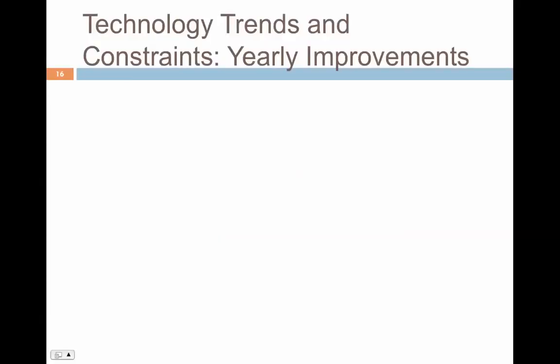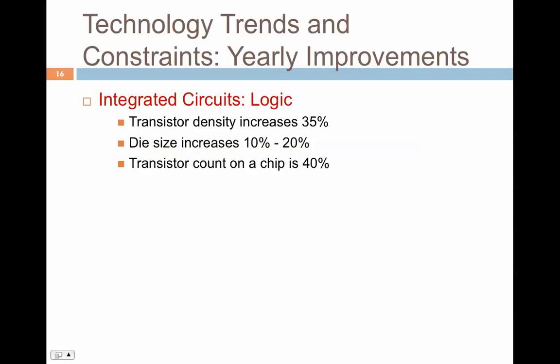Let's look at technology trends and constraints and see how things are improving on a yearly basis. The focus here is on the logic design, the DRAM, and the IO. For integrated circuits in the logic domain, transistor count is obviously increasing as technology scales into lower dimensions — for example, going from 32 to 22 nanometers. This increases transistor count by 40% and transistor density by around 35%.